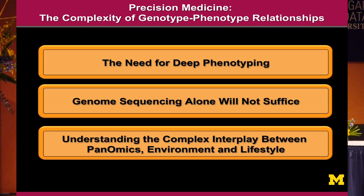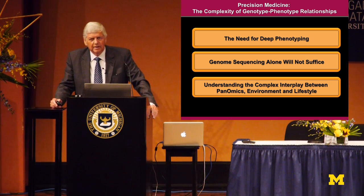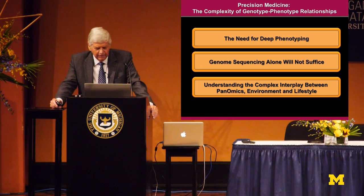The point I really want to make is the complexity of how that instructional code is actually translated into each of us in this room — hopefully in good health, but always at constant risk of illness — and the need for deep phenotyping. There is an alarming, naive simplicity being propagated at the moment that somehow sequencing genomes will tell us everything we need to know. I think one needs to actually look at the intellectual fidelity of those who have propagated this at the funding level.